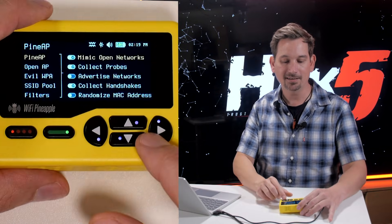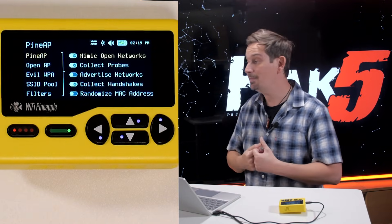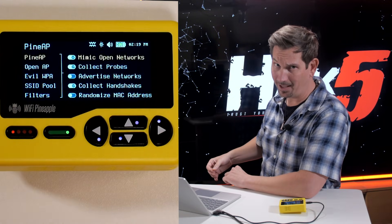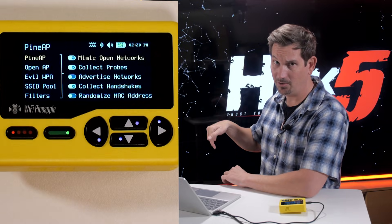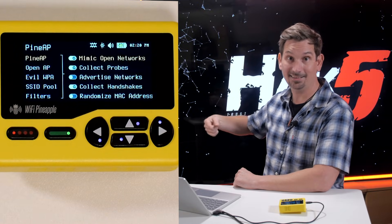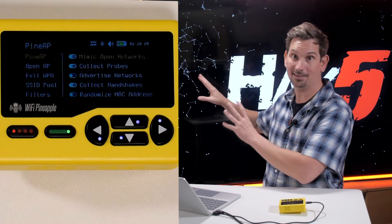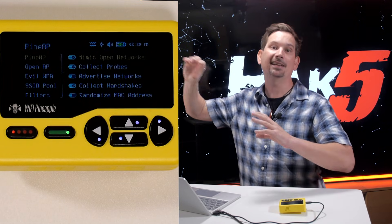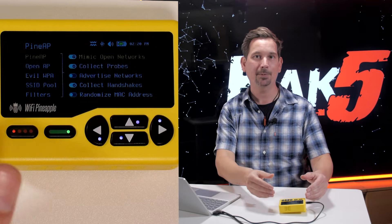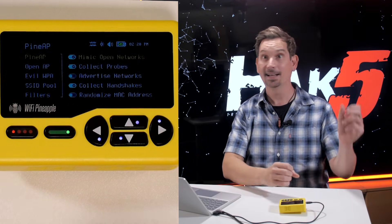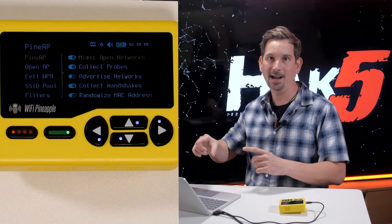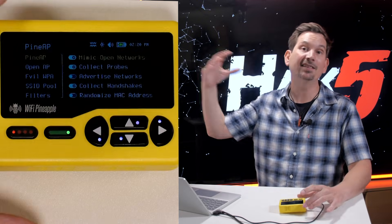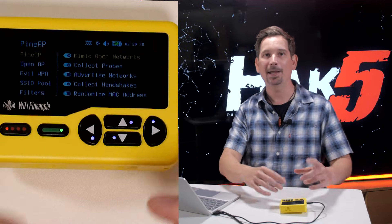By checking this box that says 'mimic open networks,' that means that if a device — like my robot vacuum cleaner, I'm not kidding — in the studio looks for a network as it constantly connects to get software updates, it's going to send out a probe request saying, 'Hey, is this network around?' And the Wi-Fi Pineapple Pager is going to hear that and say, 'Yes, that's me.' It's going to mimic that network, and my robot vacuum cleaner is going to connect to the Wi-Fi Pineapple Pager.